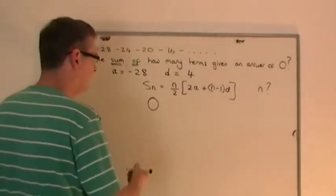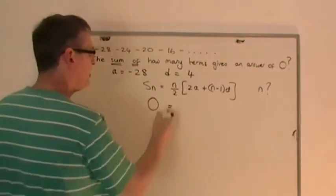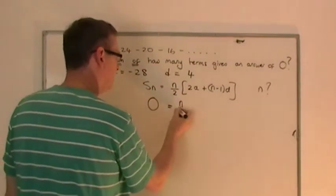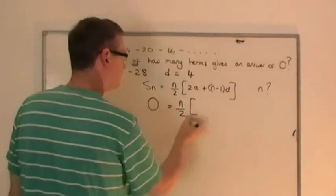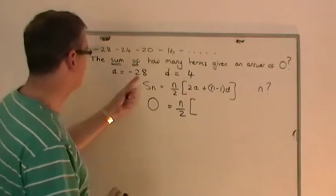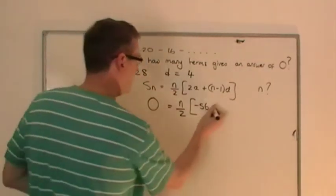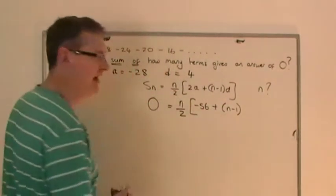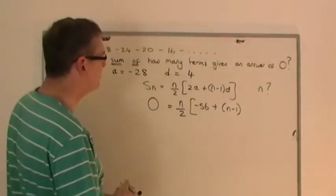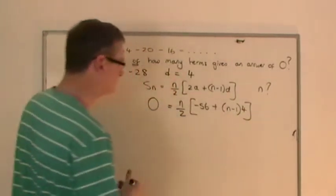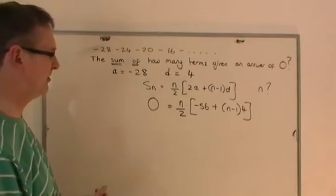Equals, do I know how many terms this is that gives an answer of zero? No I don't. So n over 2, bracket, 2a's. Well, 2 lots of minus 28 is minus 56. Plus, I don't know n, so n minus 1. Do I know d? Yes I do. It's 4, so we put a 4 there. So you get this coming out.